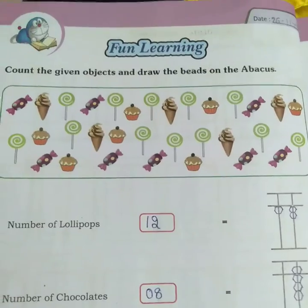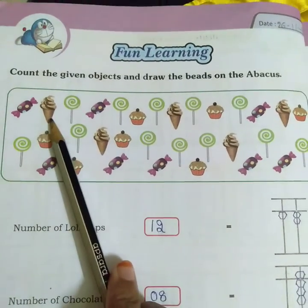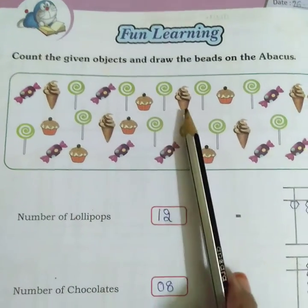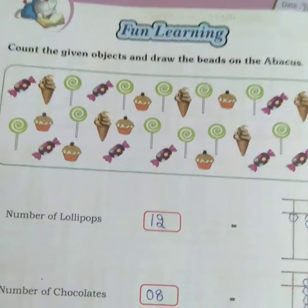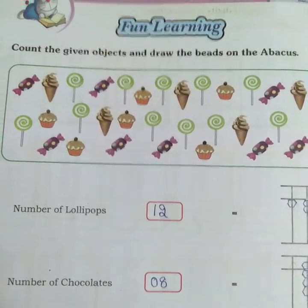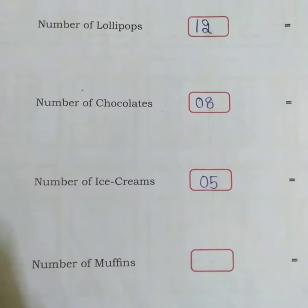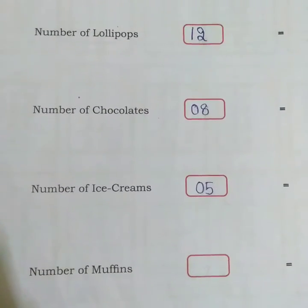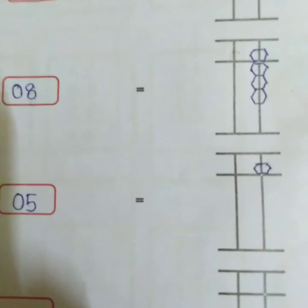Now let's count how many ice creams there are: 1, 2, 3, 4, 5 — there are 5 ice creams. So write 5 in the given box. 5 is also a 1-digit number, so draw 1 heaven beat in the 1's place.